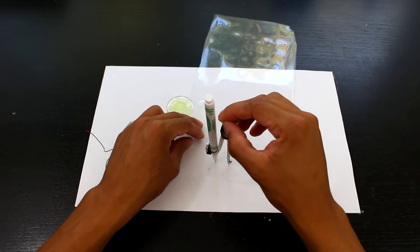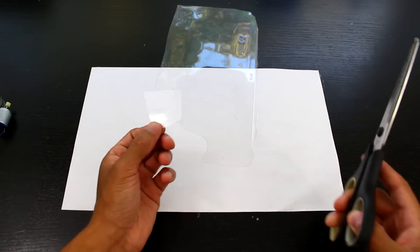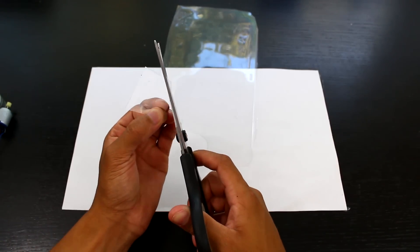I'm going to start off by tracing a circle slightly smaller than the plastic case for the candle. I'm going to cut it out.